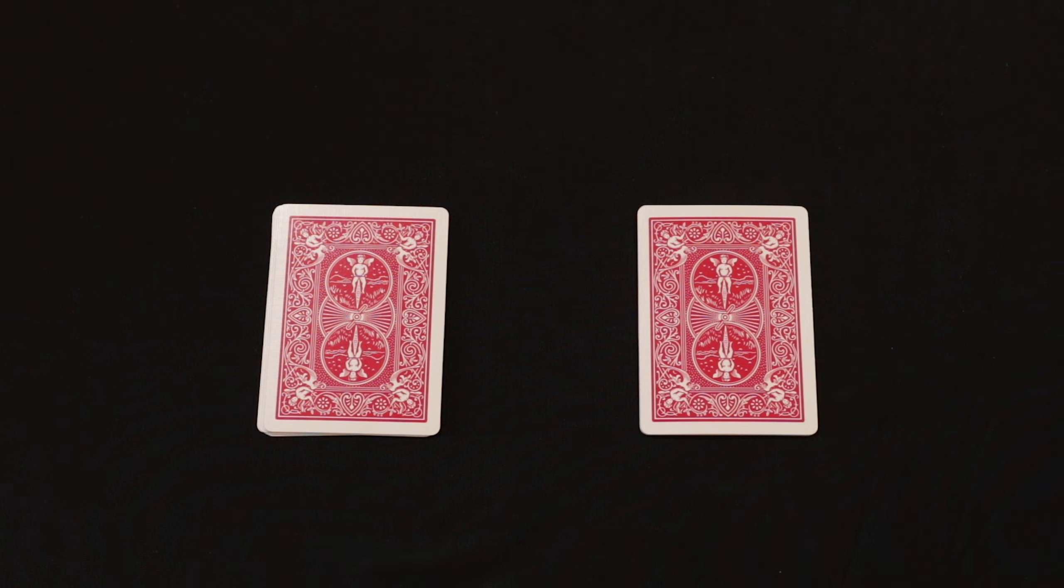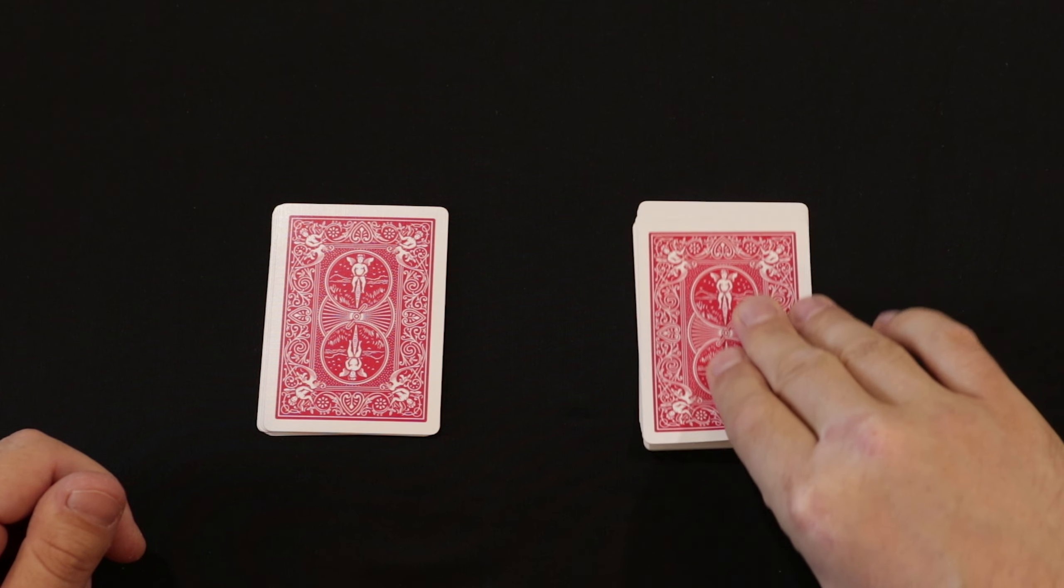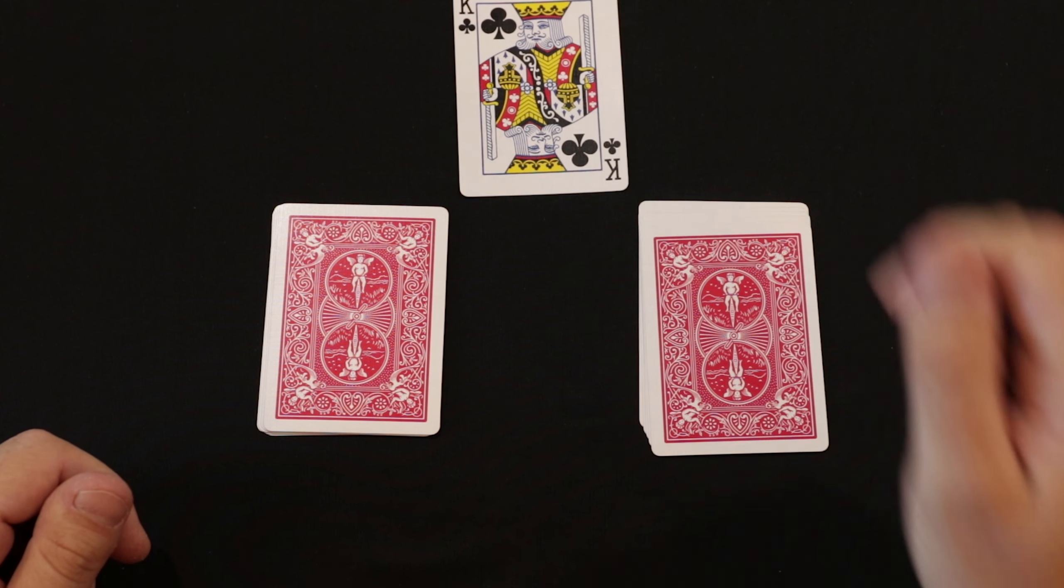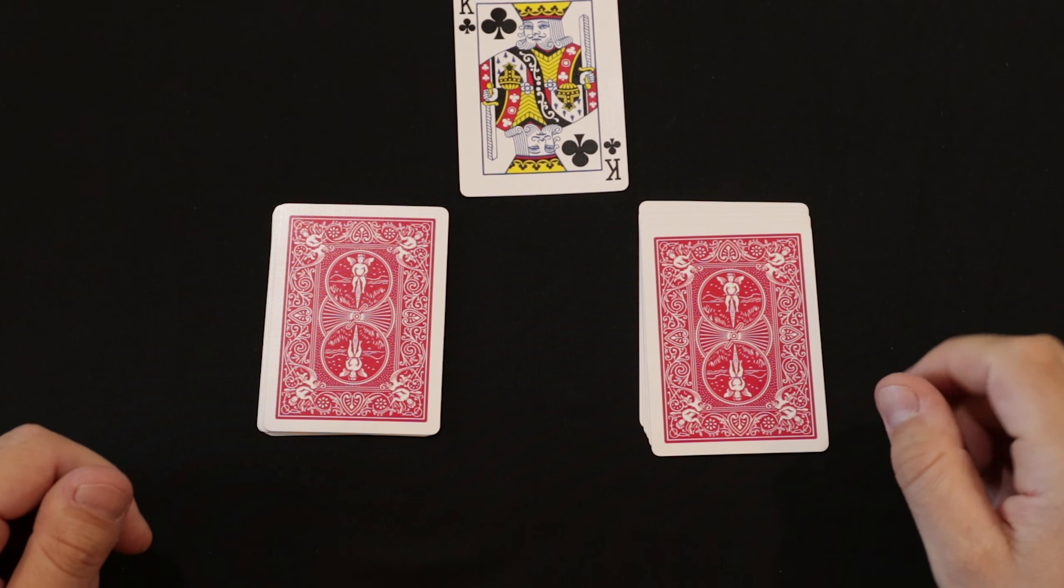Ask your spectator to choose any pile and turn over the top card. Suppose the spectator chooses this pile. Let's turn over the top card which is the King of Clubs. Put the six card pile on top of the pile from which you got the King.